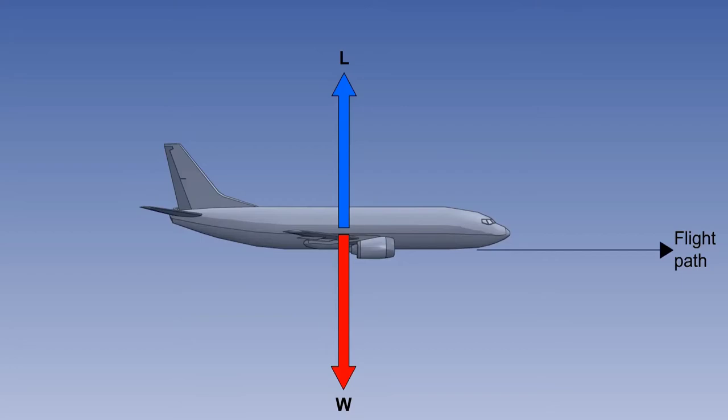Lift acts through the centre of pressure, CP, normal or at 90 degrees to the flight path. Drag acts backwards, parallel to the flight path.